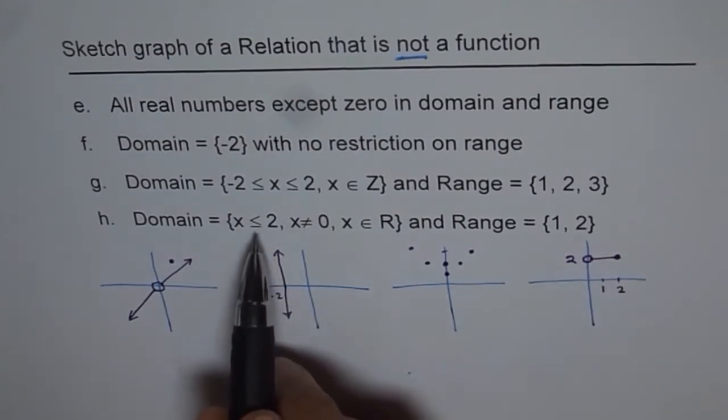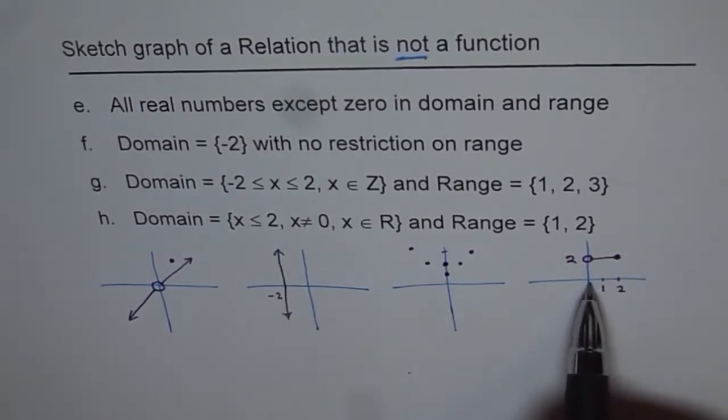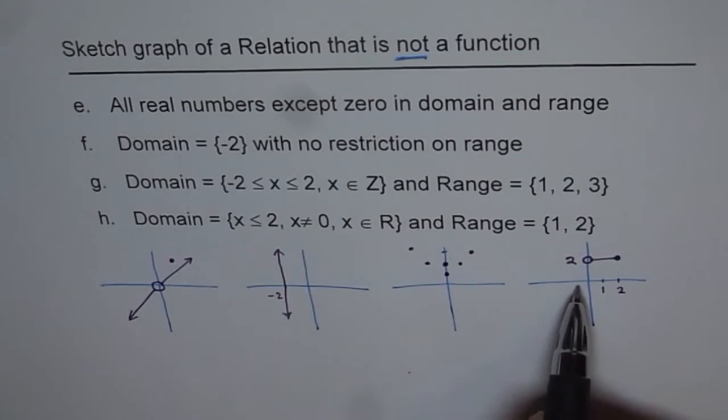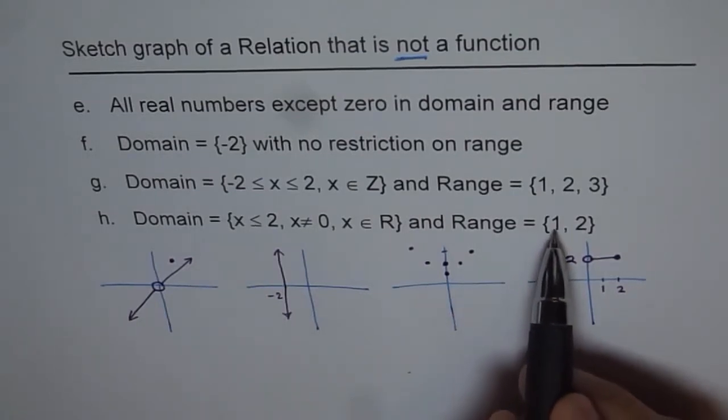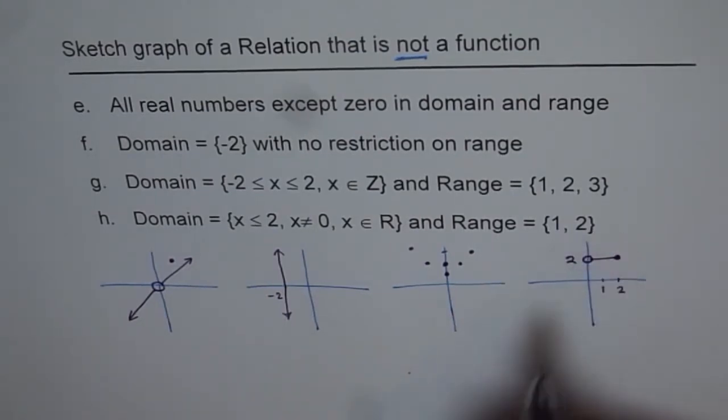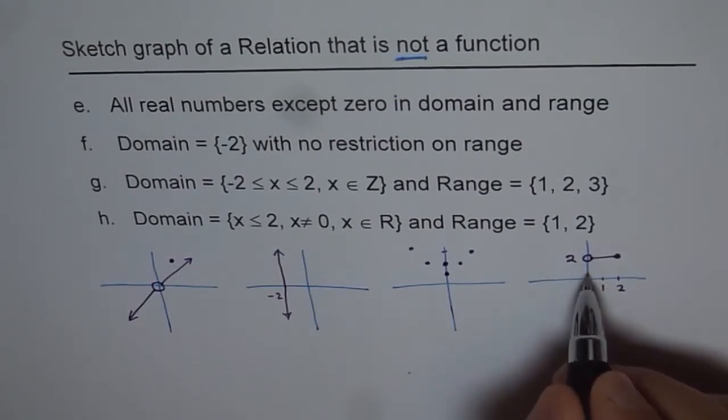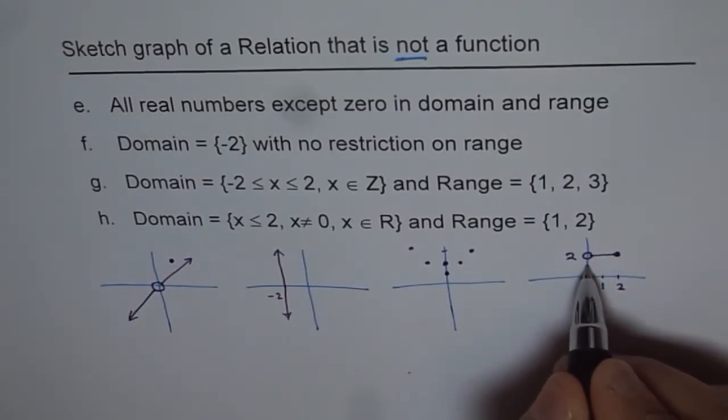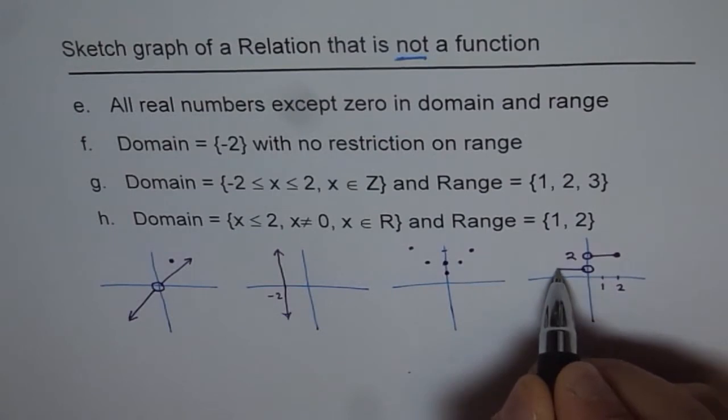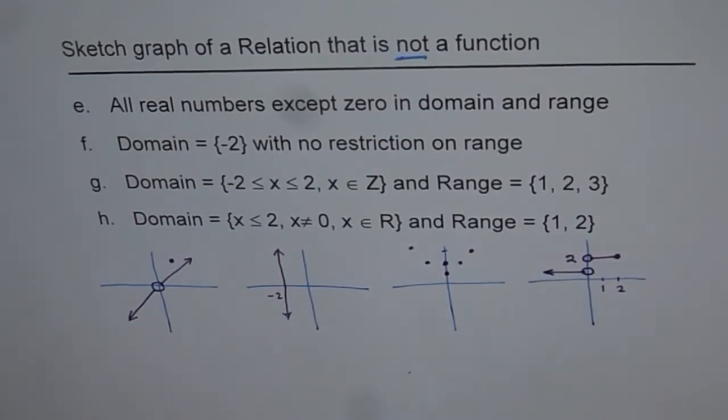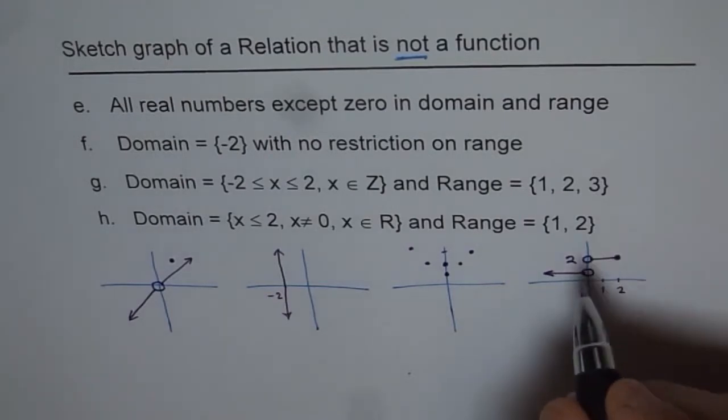So that ensures that we have come all the way from 2 to 0, and then we have to go further down. And range is 1 and 2, just 2 numbers. So we have already occupied space for 2, and for 1 we can go from here with a hole here, with an arrow. So that meets the criteria for us. That is how we can make it.